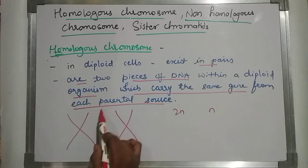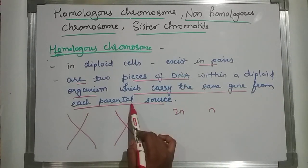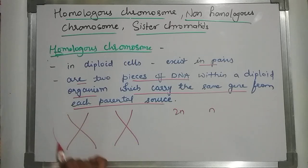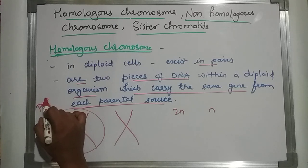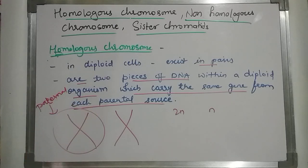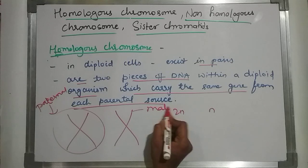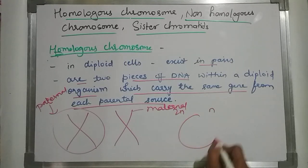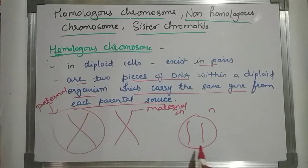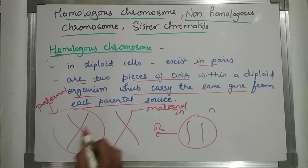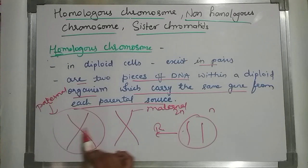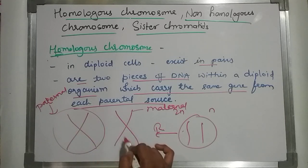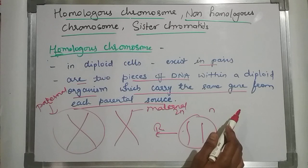They carry the same gene from each parental source — one from paternal and one from maternal. After replication it will look like a complete chromosome. First it will be only one chromatid, but after replication it forms the complete chromosome.